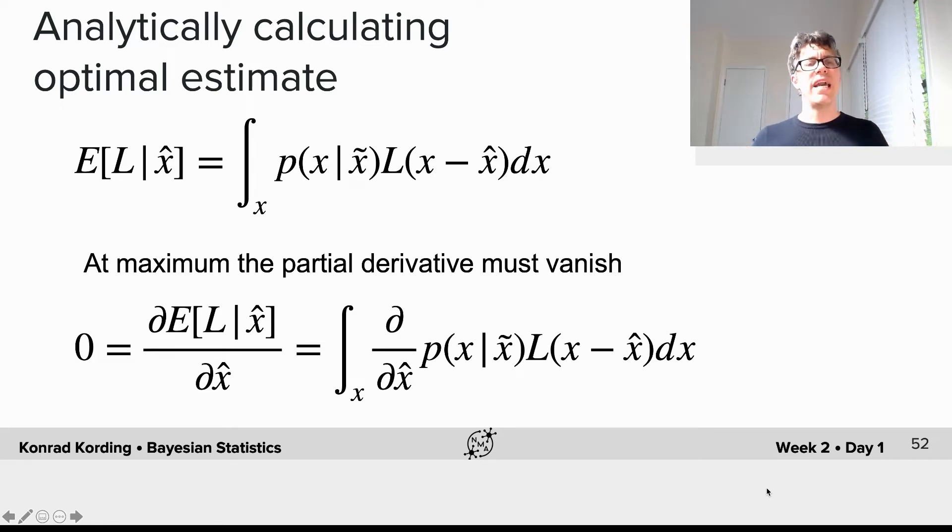There are many cases where we can analytically calculate the optimal estimates. How does that look like? As we saw before, the expected value of the loss given an estimate x̂ is the integral of the posterior times the loss.